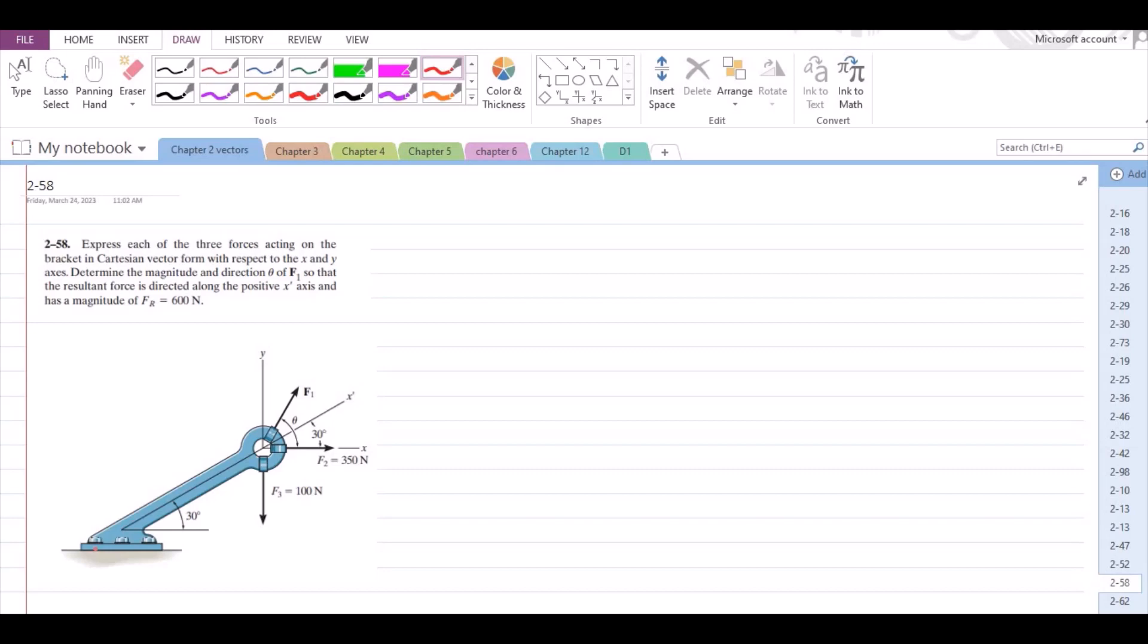According to this problem, we have to express each of the three forces acting on the bracket in Cartesian vector form with respect to the x and y axes, determine the magnitude and direction theta of F1 so that the resultant force is directed along the positive x dash axis and has a magnitude of 600 N.